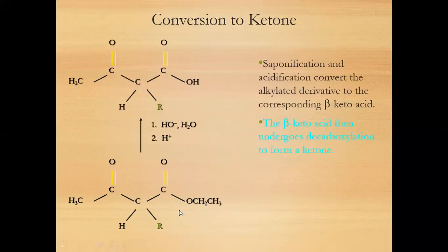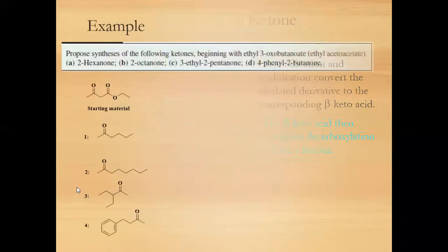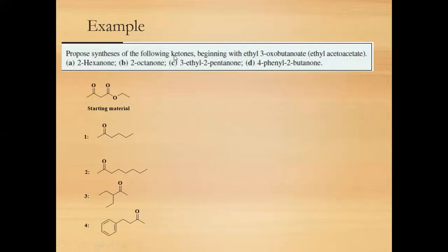The alkylated ethyl acetoacetate is then hydrolyzed — this process is known as saponification — to form a carboxylic acid. This carboxylic acid is then decarboxylated by heating to form the final ketone product.